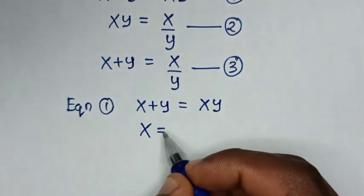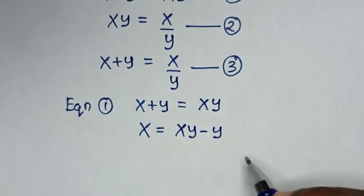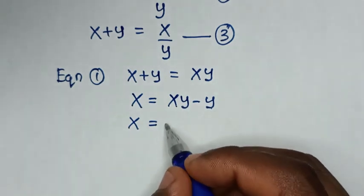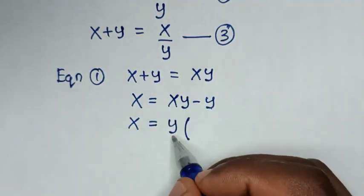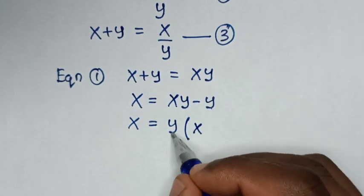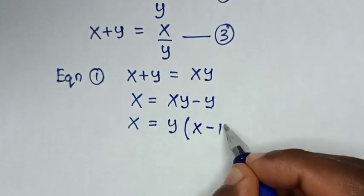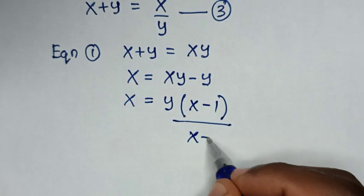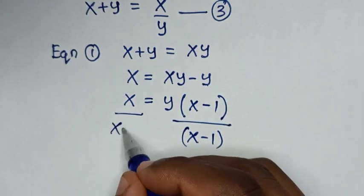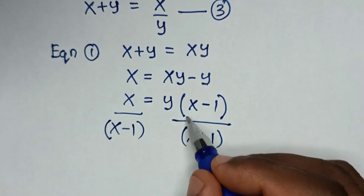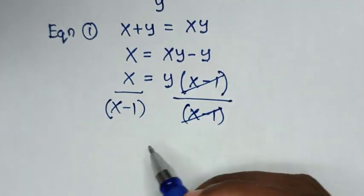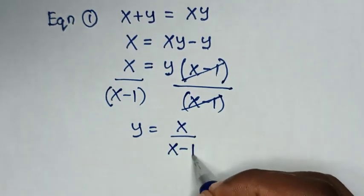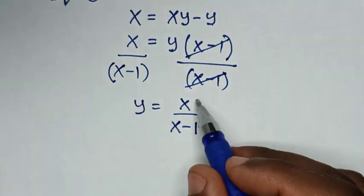Then it will be x is equal to xy minus y. Here y is common, so we take y out of the bracket: x equals y times (x minus 1). To make y the subject, we divide both sides by (x minus 1), and we get y is equal to x over (x minus 1).